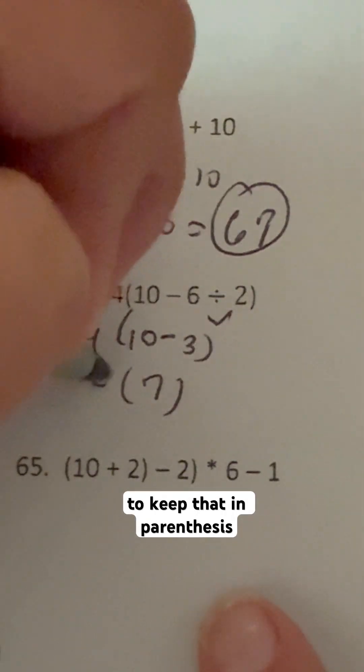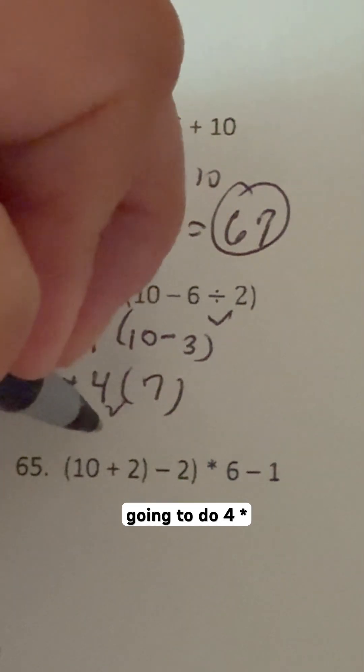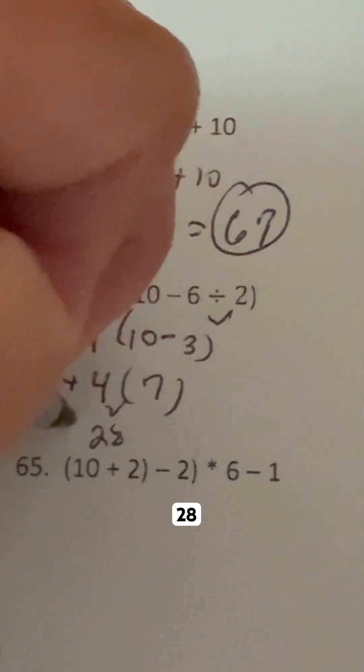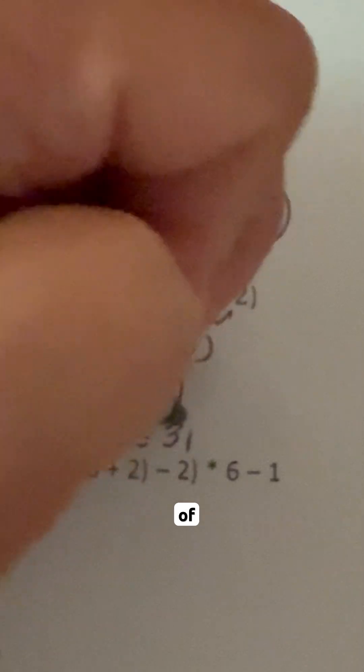And the reason why we're going to keep that in parentheses this time is because there's no operator in between the 4 and the 7. So that means multiplying right there. We're going to do 4 times 7, which is 28, plus that 3 gives us a grand total of 31.